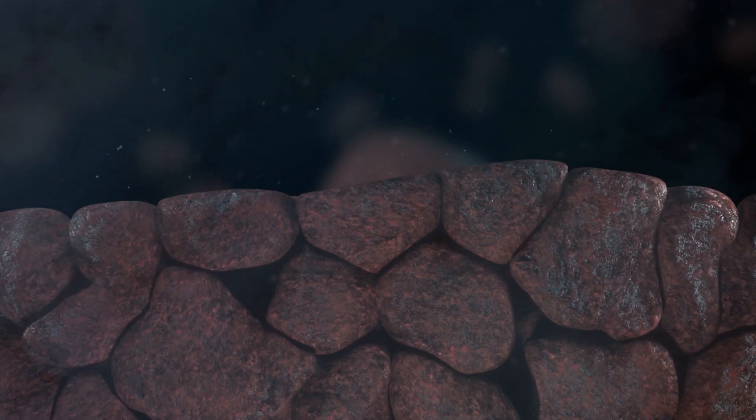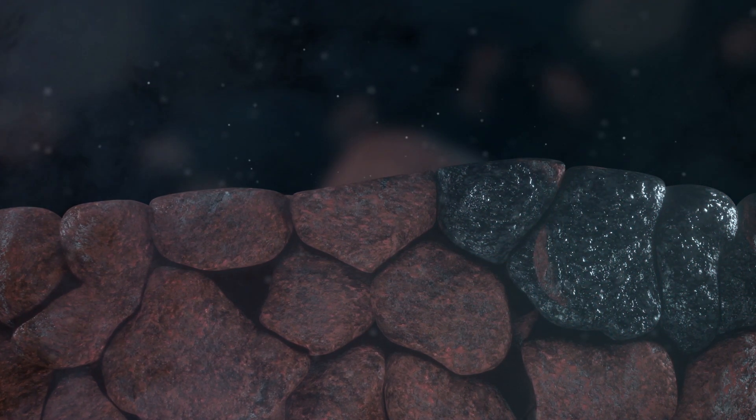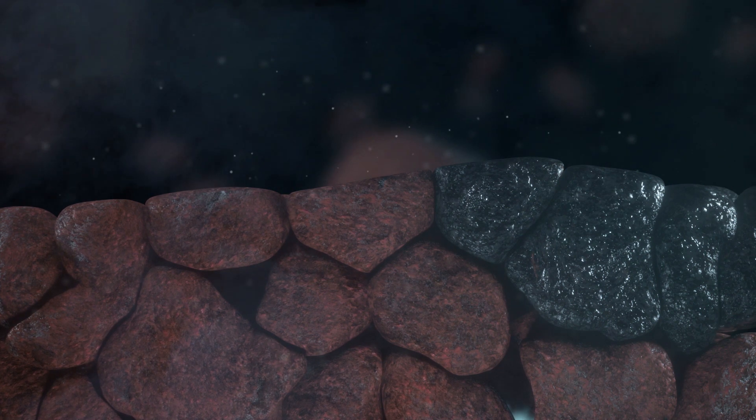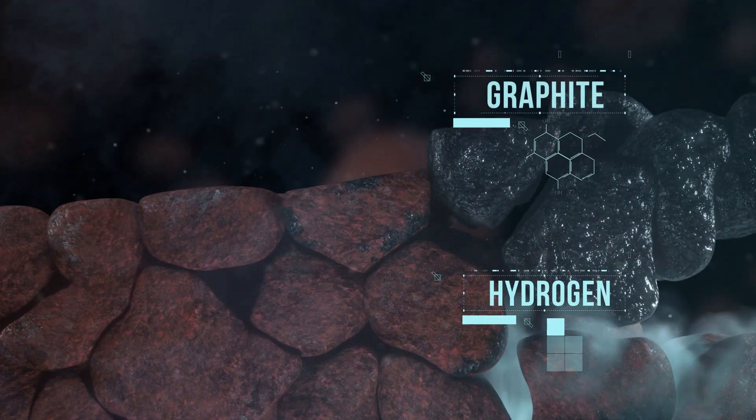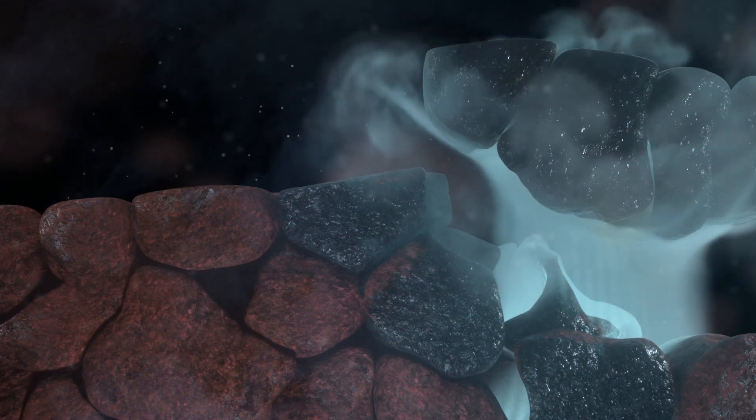In this process, the methane molecules in the natural gas interact with the surface of the catalyst decomposing into hydrogen and graphite. Under these conditions, the catalyst disintegrates into nanofragments, a process known as dusting.